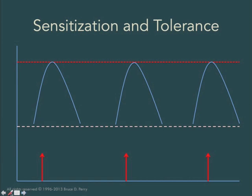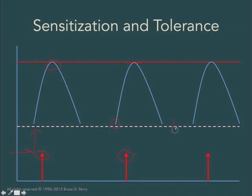If, for example, you take some stimulus — and this could be a drug or it could be stress — and you activate one of these neural networks, you'll get a certain level of activation for a certain amount of stimulation. And if you then wait a couple of weeks and stimulate with the same intensity, you will get the same response from those systems. In other words, the same stimulus leads to the same response. And again, if you wait for a longer period of time — three days, a week — and stimulate that system again with the same level and intensity of input, you'll get the same signal.